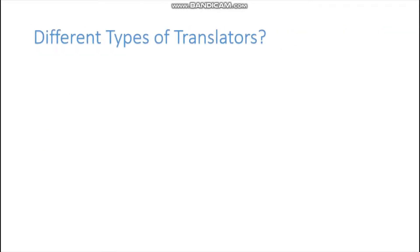Now let's understand the different types of translators. Just like Google Translate supports various languages, in programming we also have different ways to convert a high-level language into machine language. The motive is to translate so that the machine can understand — and there are different ways to do this.